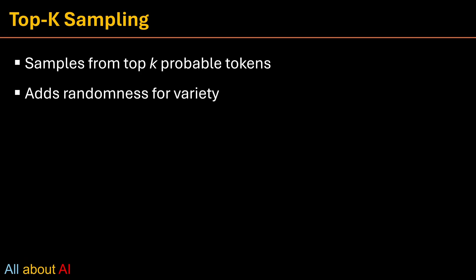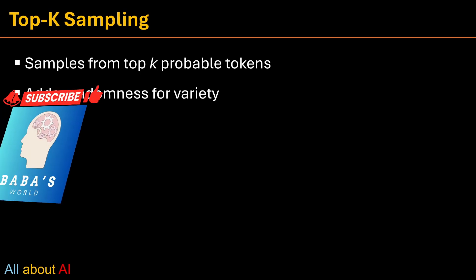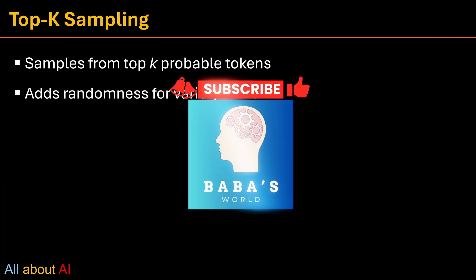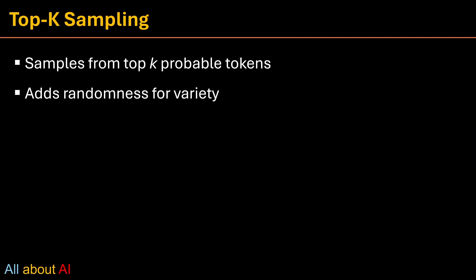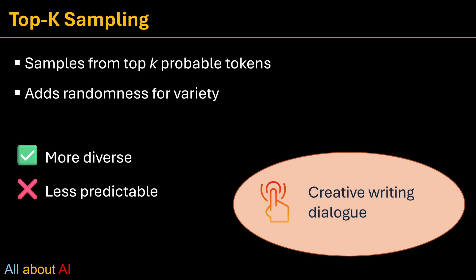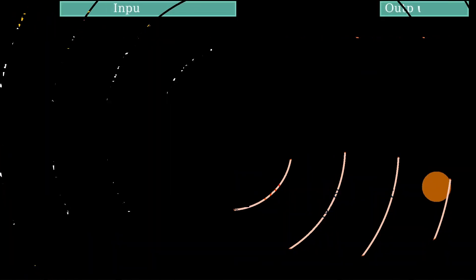Next we have top K sampling. Top K is where we introduce a little chaos. We cut out the long tail of unlikely words and sample from top K choices. It's like picking from a shortlist. More interesting than greedy, but still somewhat controlled. Ideal for stories and creative tasks. It's also used for dialogue.